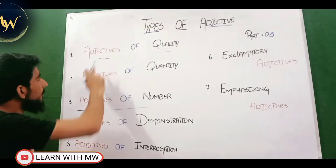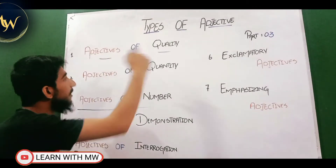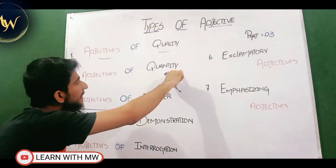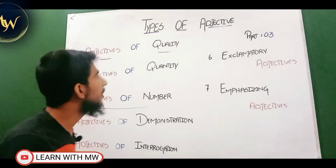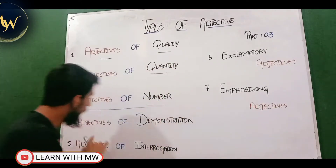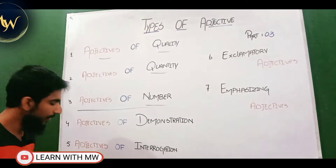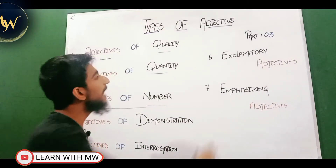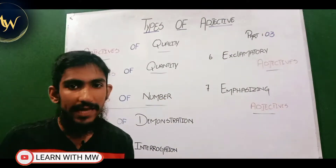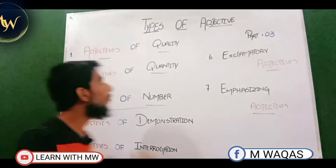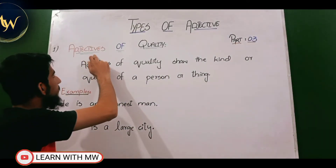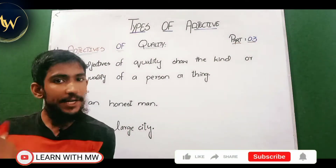In this video we will also define what adjective of quality is, what adjective of quantity is, and what adjective of number is. We will also discuss the difference between adjective of quantity and adjective of number in a very conceptual and grammatical way. Now we will start from the first type of adjective, which is adjective of quality. I will be giving you tips and tricks on how to find adjective of quality in English grammar.